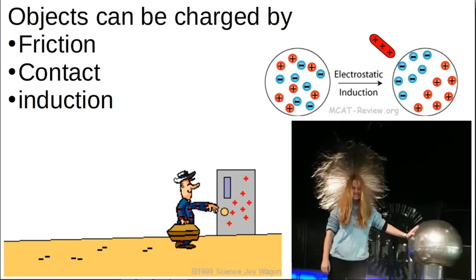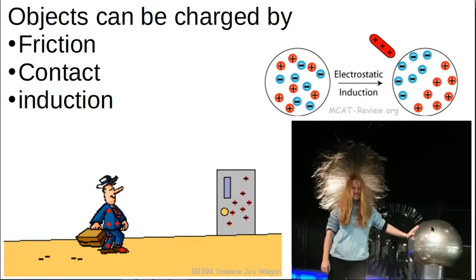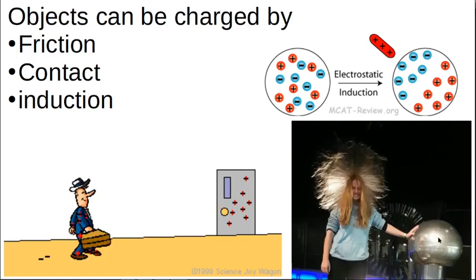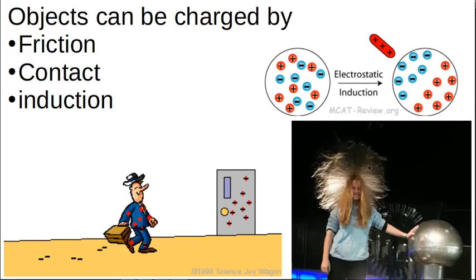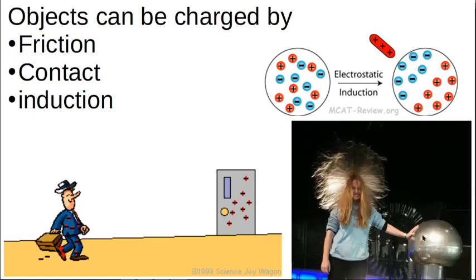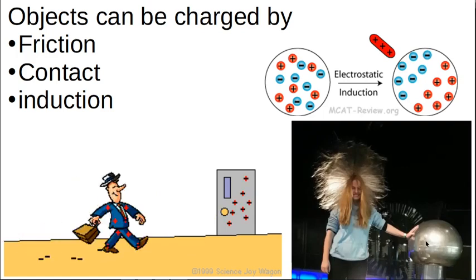So here is charging by contact. This object is charged, the van der Graaf generator. And then if you touch the object, you and the object share your electrons until all the strands of your hair have the same charge, like charges repel, and you end up with this lovely vision of contact charging.